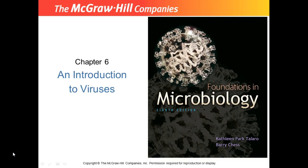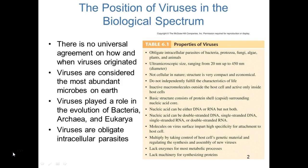This recording will cover chapter 6 in your textbook, An Introduction to the Viruses. There is no universal agreement on how viruses originated or when they originated. They are considered to be the most abundant microbes on Earth, if we can even call them microbes. We know that viruses played a role in the evolution of bacteria, archaea, and eukarya — they shaped, and still continue to shape, the genome of these organisms.